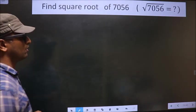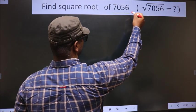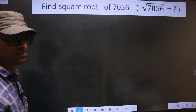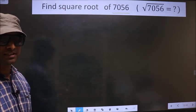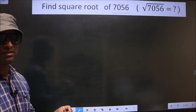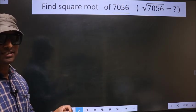Find square root of 7056. To find the square root by long division method, first we have to frame it in this way.